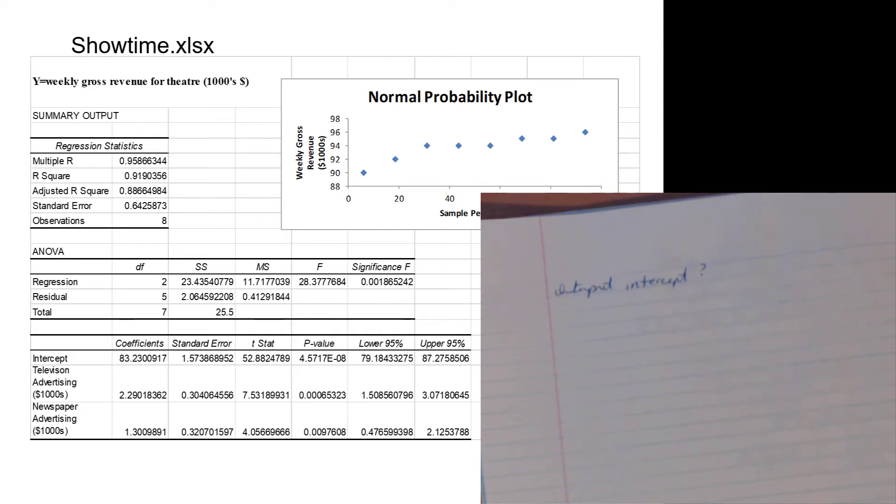Could the weekly gross revenue for a movie theater be eighty-three thousand dollars? Yeah, assuming you're not closed by COVID, sure, it's a possible value. It's not negative or something goofy. Now, could the two x variables be equal to zero? Could you have a week where you don't run any TV ads? Sure. Could you have a week where you don't run any newspaper ads? Sure. You're not obligated to run these things.